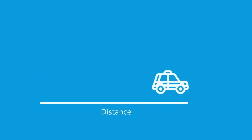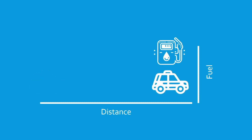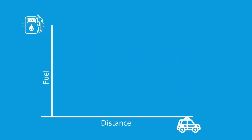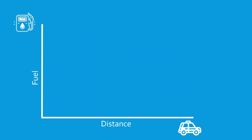As a basic example, imagine you're driving a car, and every time you take a trip, you keep track of how far you drive and how much gas the car uses. After a few trips, you make a graph showing the miles driven on each trip on the x-axis, and the gas used on each trip on the y-axis.